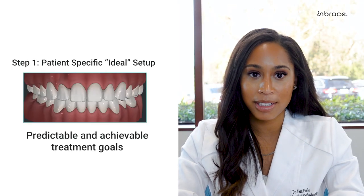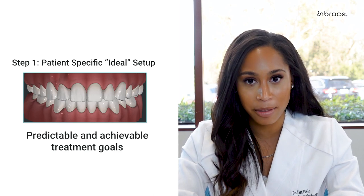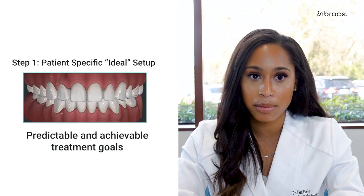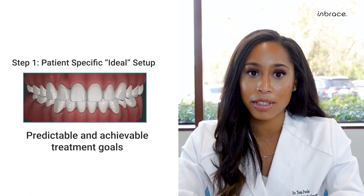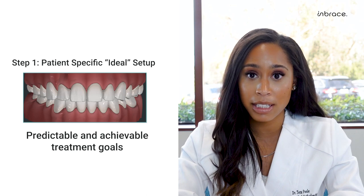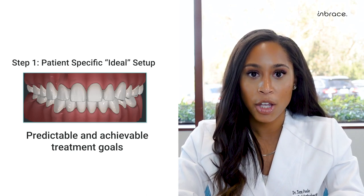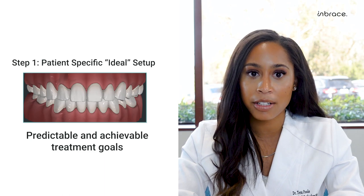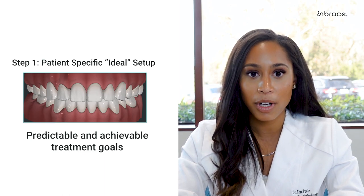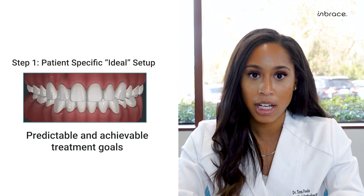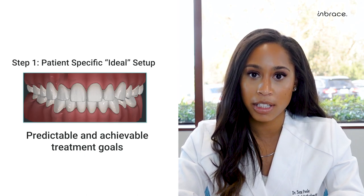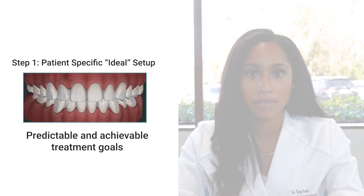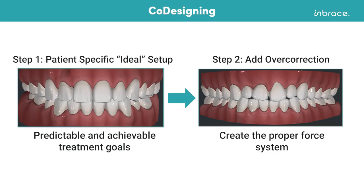The initial step of the smile design process is completed behind the scenes by the smile design team. They start with the patient-specific ideal setup, which includes the projected outcome based on our inputs on the treatment prescription — hence why being as thorough and detailed as possible is best. You can think of this setup as your outcome simulator or aligner setup before overcorrections are added. As with many orthodontic systems, there are factors that need to be overcome when teeth are moved, such as unwanted side effects of movement. Once the ideal setup is visualized, it is then much easier for the team to add in necessary overcorrections so that the proper force system is created to achieve the outcome we seek.